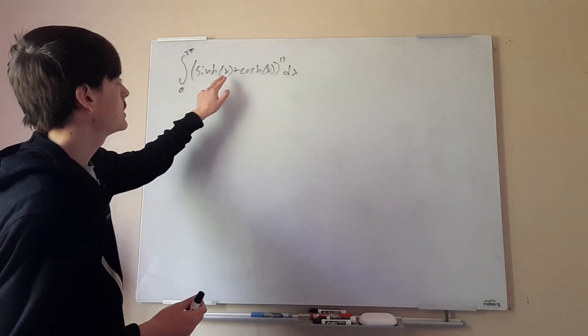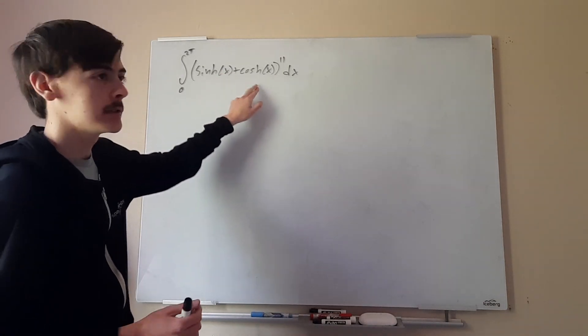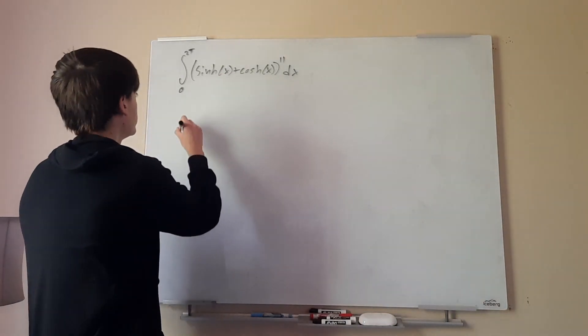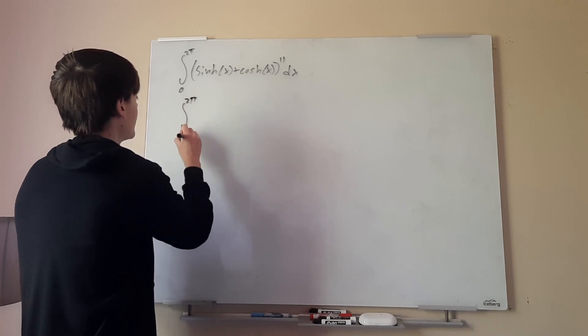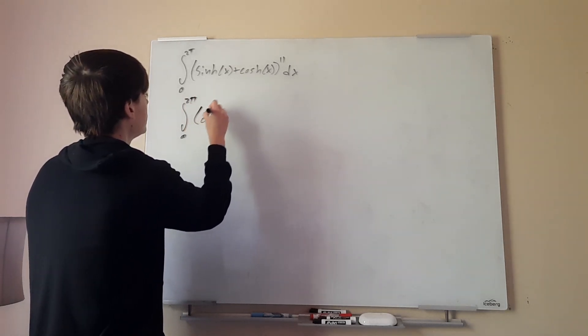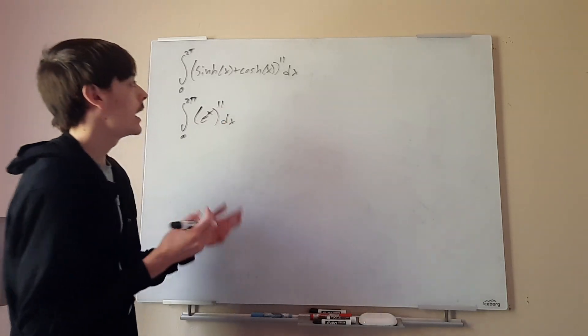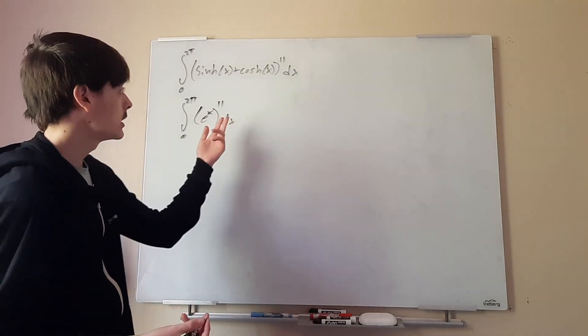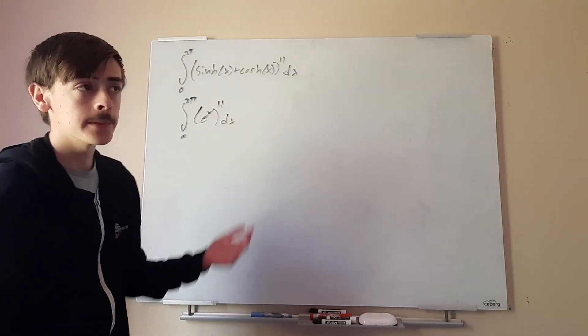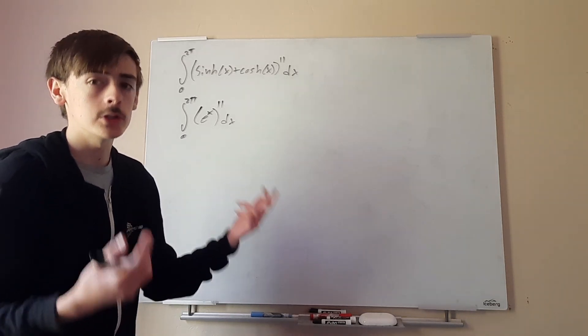So the first thing we can notice is we have sinh(x) + cosh(x). What we can do, we can recognize that this is a formula actually - sinh + cosh is just e^x. So we'll have (e^x)^11 dx. However, I know not everyone's familiar with hyperbolic trig, so they might not remember this formula. So I'm going to go through and show you how that works.